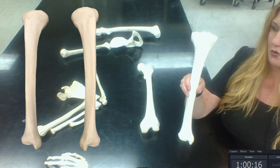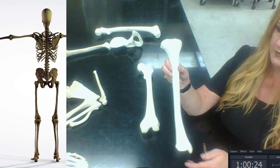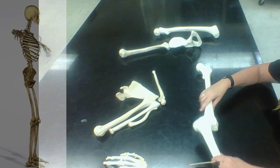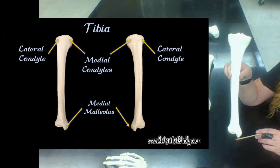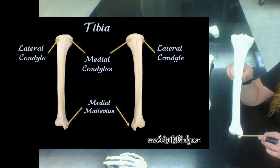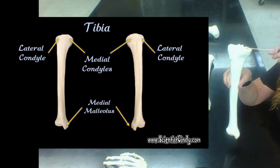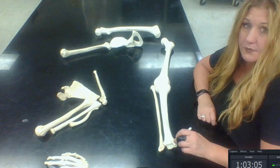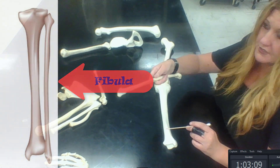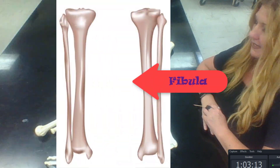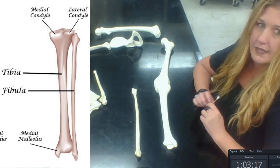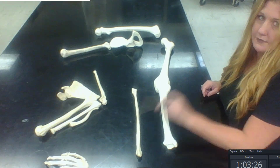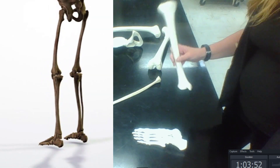The tibia forms the shin. One side is smooth and the other comes to a slight point — that pointed edge is the shin. The tibia articulates proximally with the femur and distally includes the medial malleolus, which is the inner ankle bone you can feel. Knowing that this is the medial malleolus helps identify the medial condyle and lateral condyle of the tibia. The fibula is the other lower leg bone; you need to be able to recognize it and name it correctly on a practical exam.